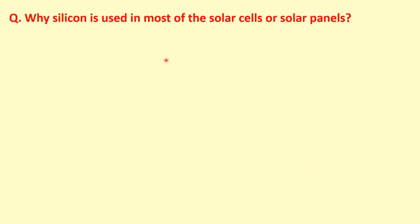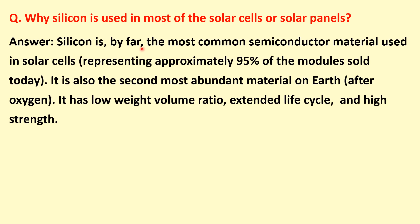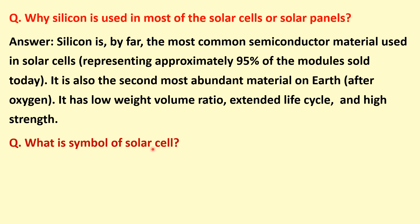Why is silicon used in most solar cells or solar panels? Because silicon is the most common semiconductor material used in solar cells, and around 95 percent of the modules are made from silicon. It is also the second most abundant material on Earth after oxygen, and it has a low weight-to-volume ratio, extended life cycle, and very high strength.